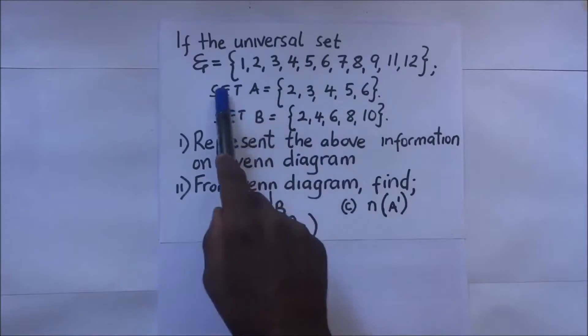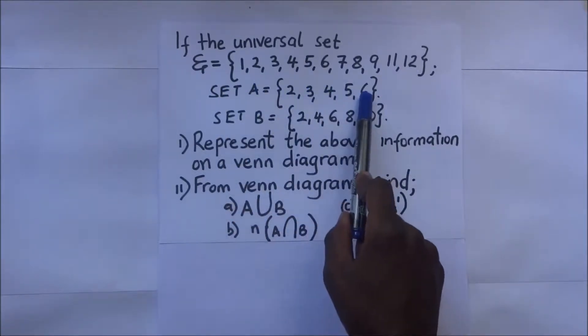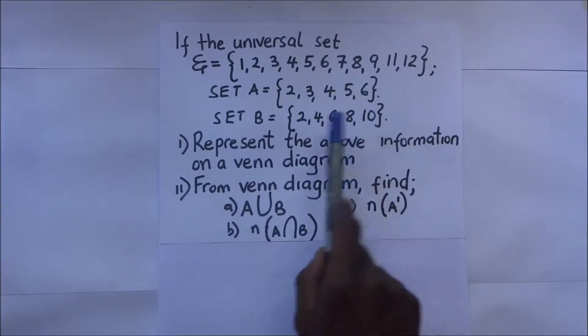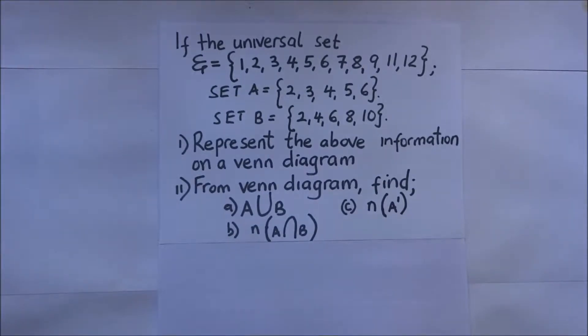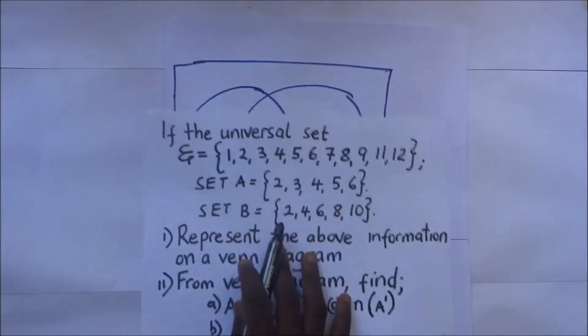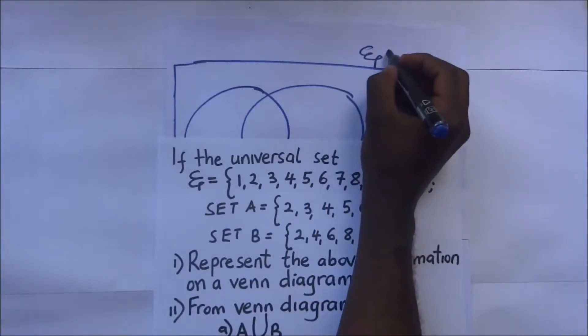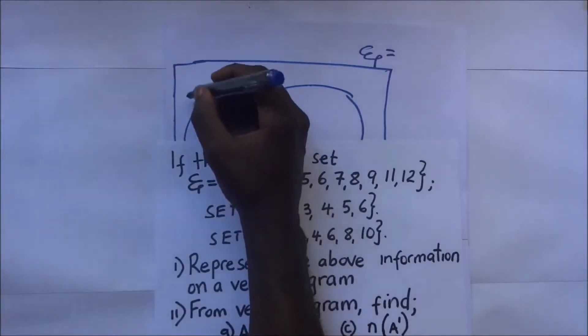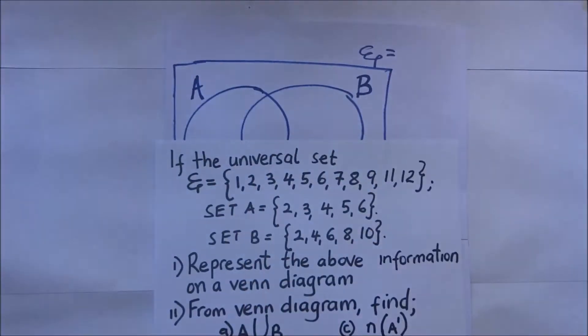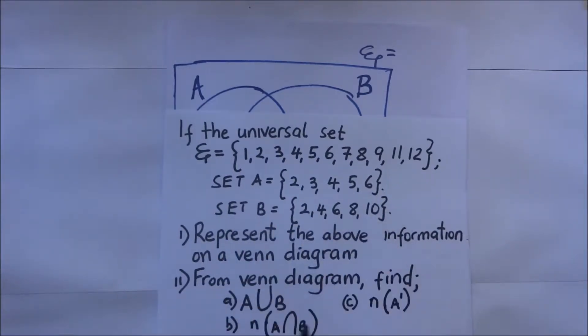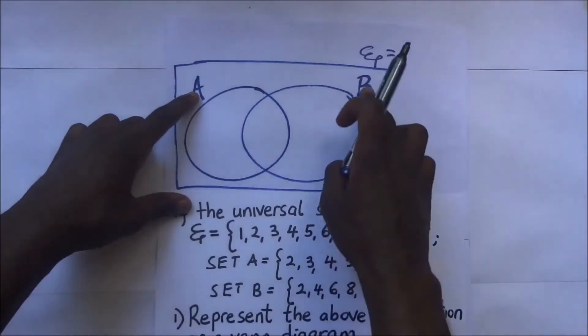Within this universal set contains set A, which is {2, 3, 4, 5, 6}, and still in this universal set we have set B, which is {2, 4, 6, 8, 10}. We're supposed to represent the above information in a Venn diagram. We'll represent our universal set on top here. We have set A here and set B right there. These are two circles.